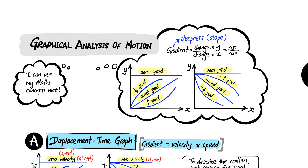Remember that gradient is like the stiffness of a slope — how steep it is. To make it easier to understand, imagine you're walking towards the right on some terrain. For the first example, if you're walking along a totally flat path, there's no stiffness and no gradient at all — I call it zero gradient.